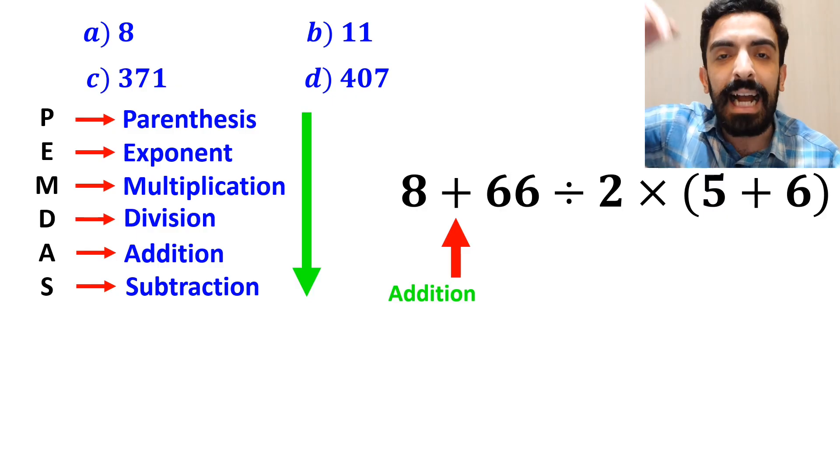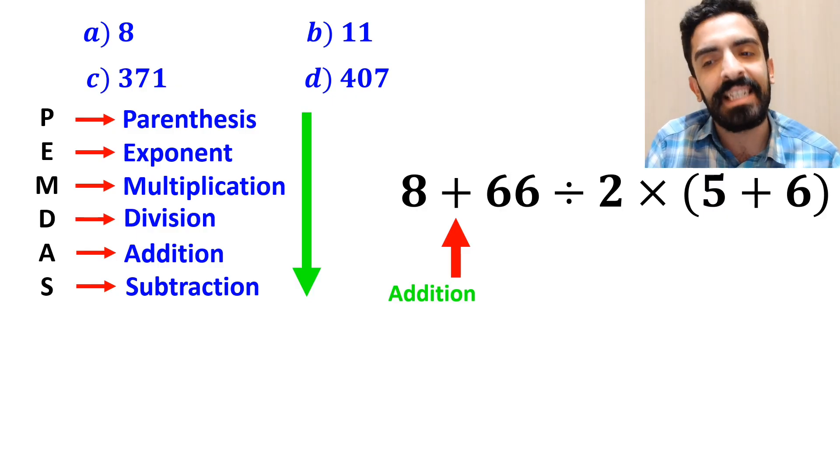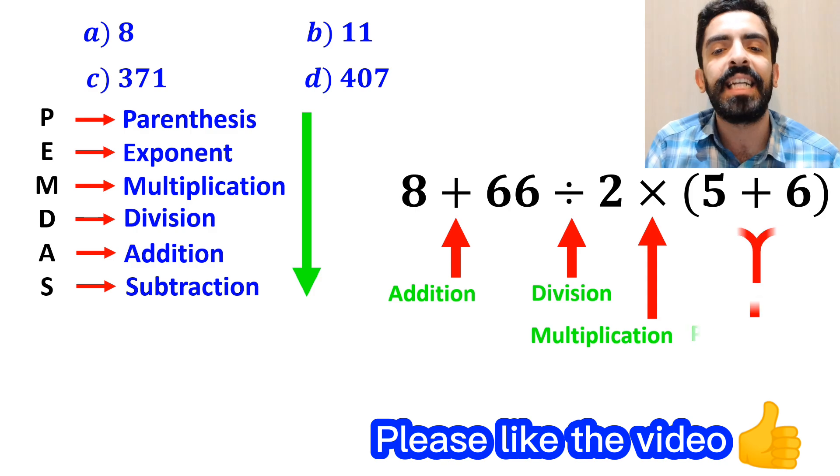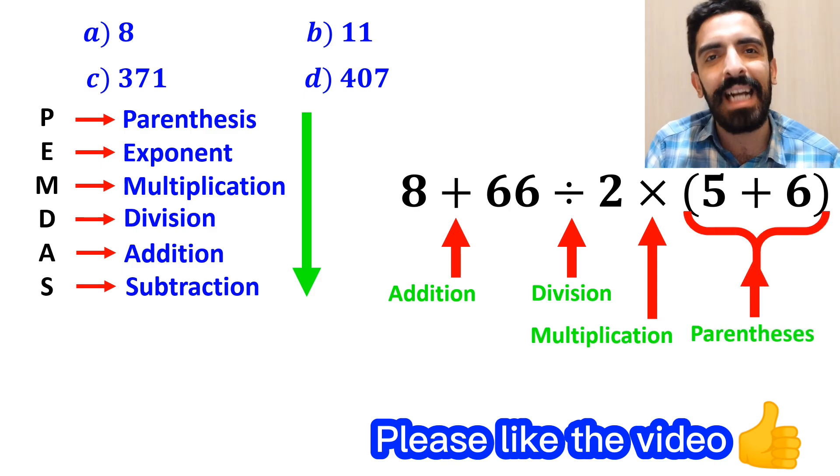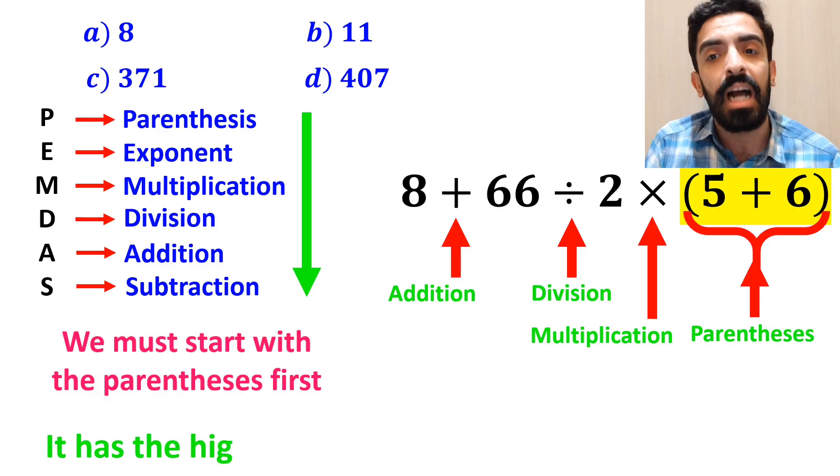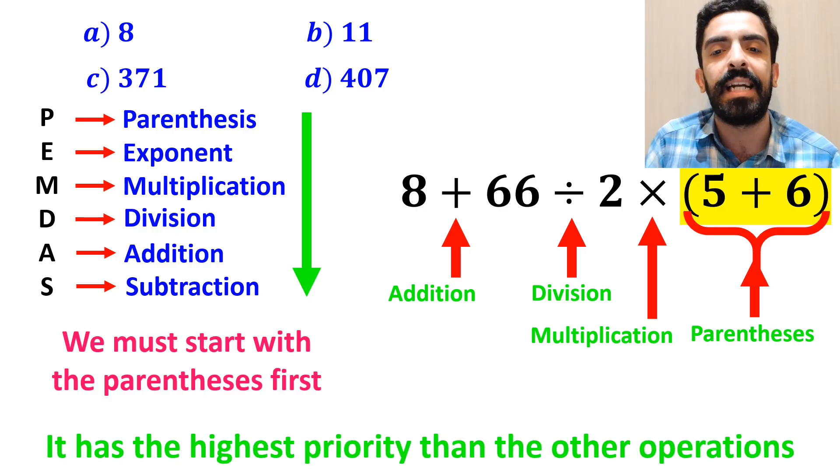as you can see in the image and this expression, first we have an addition sign, then a division sign, followed by a multiplication, and finally parenthesis. We must start with the parenthesis first because it has the highest priority than the other operations.